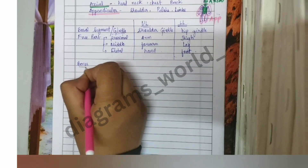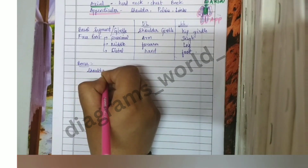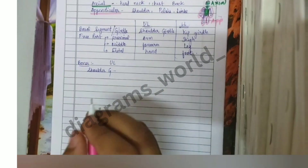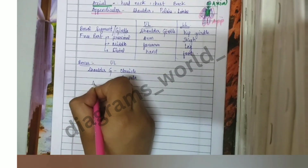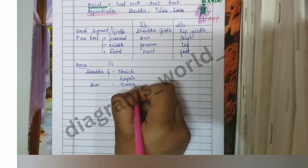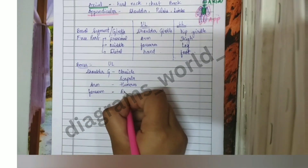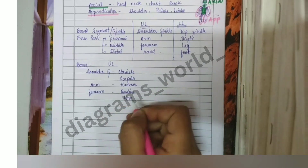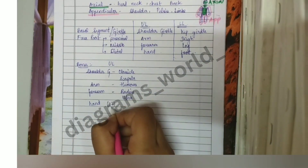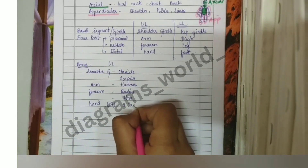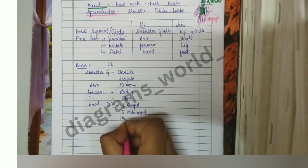The shoulder girdle in the upper limb is made up of the clavicle and scapula. The arm is made up of the humerus. The forearm has two bones: radius and ulna. The hand contains a total of 27 bones — eight carpal bones, five metacarpal bones, and 14 phalanges.